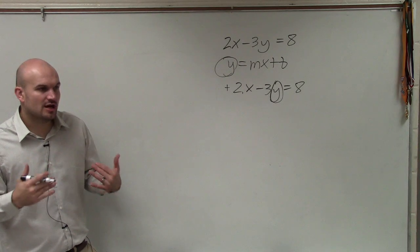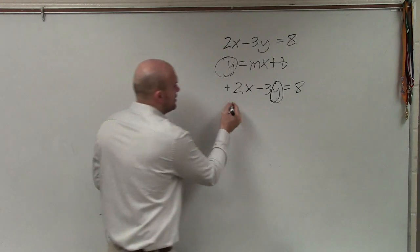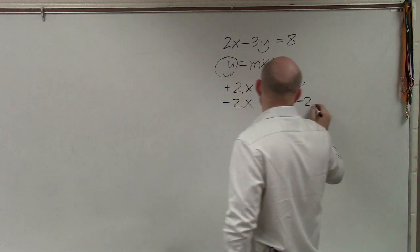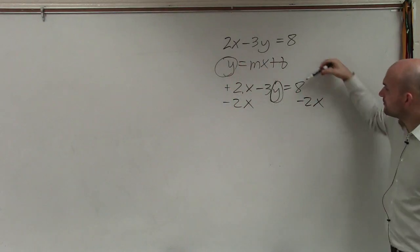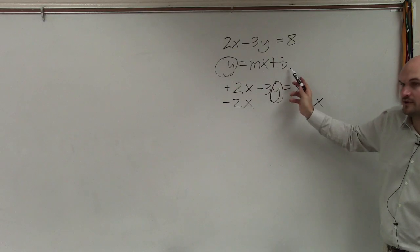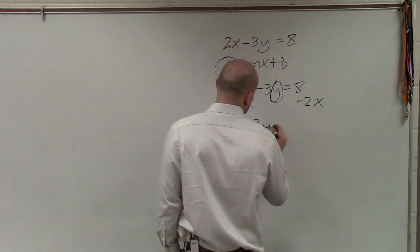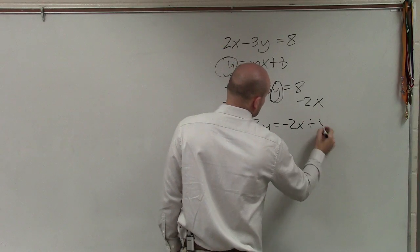So the first thing we always undo when solving for y is always undo addition and subtraction first. So I undo adding 2x by subtracting 2x. We don't want to write it 8 minus 2x. We want to have your x before your constant. So we'll now write this as negative 3y equals negative 2x plus 8.